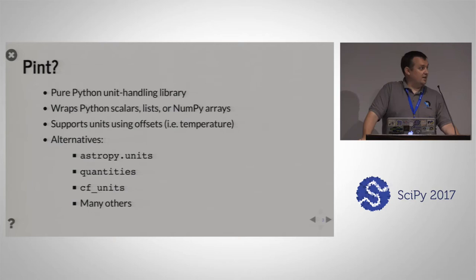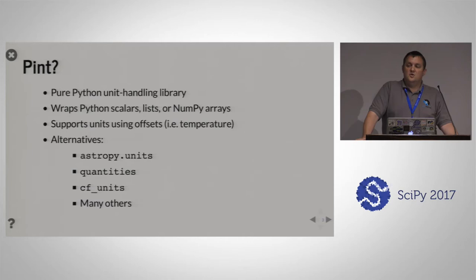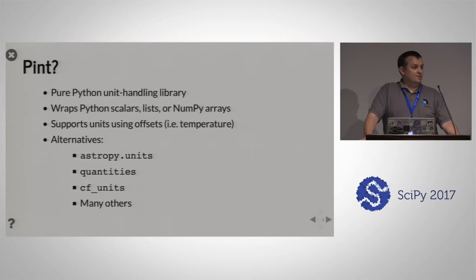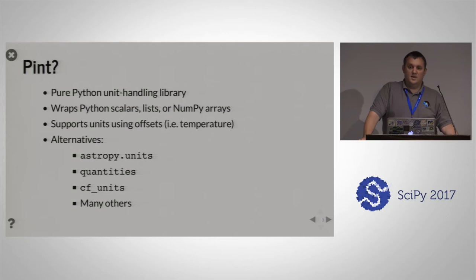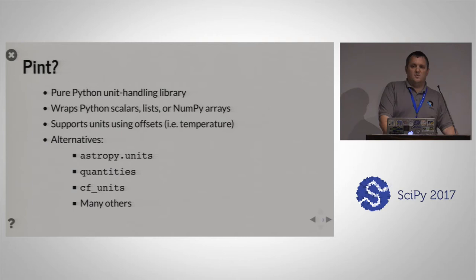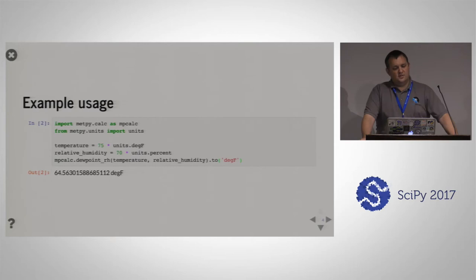A little more about Pint: it's pure Python, so there are no compiled extensions, which is great for ease of installation and distribution. Rather than being a NumPy array subclass, it wraps various numeric entities — lists of numbers, scalars, or NumPy arrays. It supports temperature units with offsets, like Celsius versus Kelvin, which is probably the biggest reason we need it in meteorology. There are a few alternatives, including AstroPy units, and someone did a talk at SciPy a few years ago comparing about 17 different unit libraries.